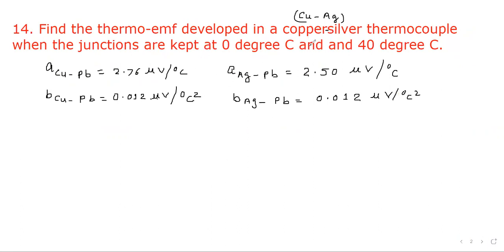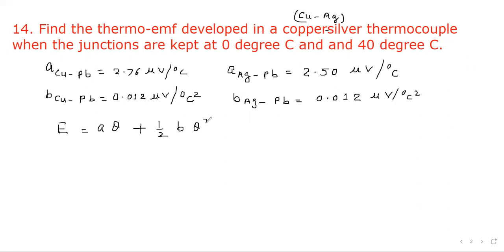Find the thermo-EMF developed in a copper-silver thermocouple when the junctions are kept at 0 degrees centigrade and 40 degrees centigrade. We are given these values, and we use the formula: EMF equals A·θ plus half B·θ².